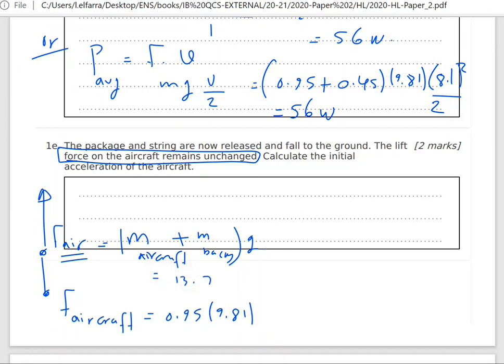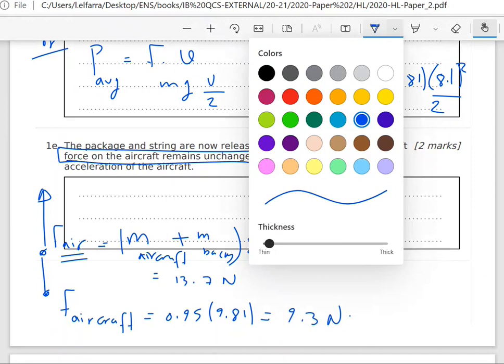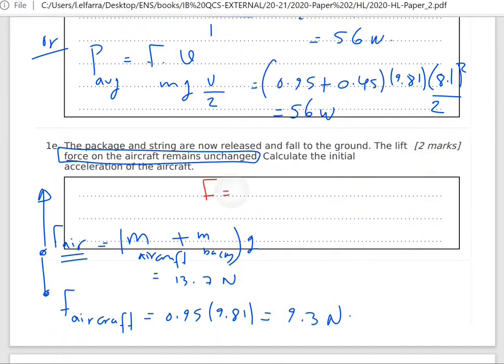From Newton's second law, force equals mass times acceleration. I need to find the acceleration. The acceleration will be this net force divided by m. This equals 13.7 minus 9.3 divided by the mass of the aircraft, which is 0.95, and it gives us 4.6 meters per second squared. That's it folks, see you on the second video inshallah.